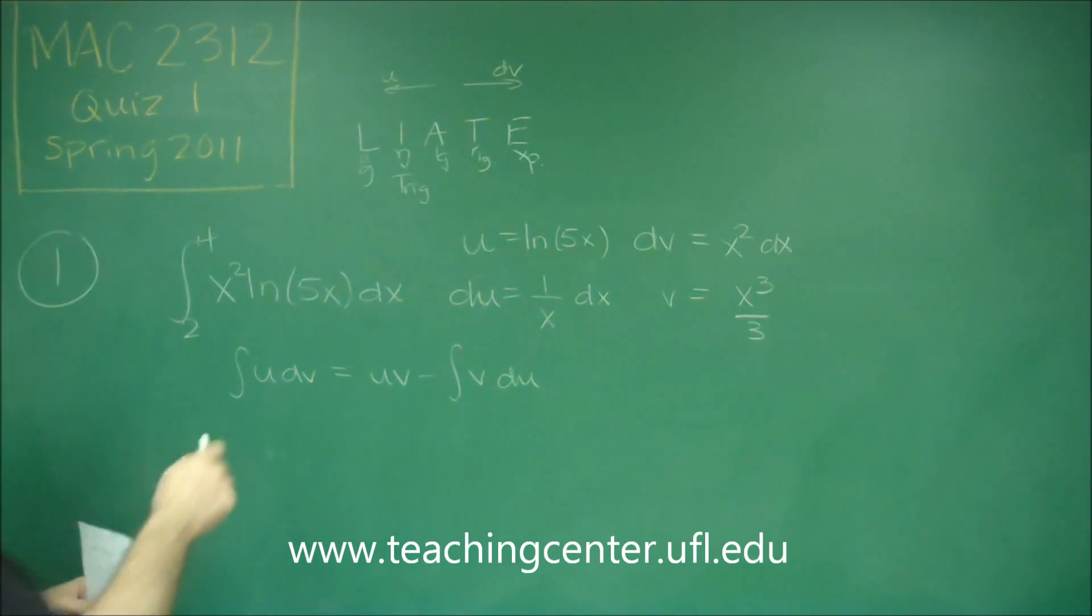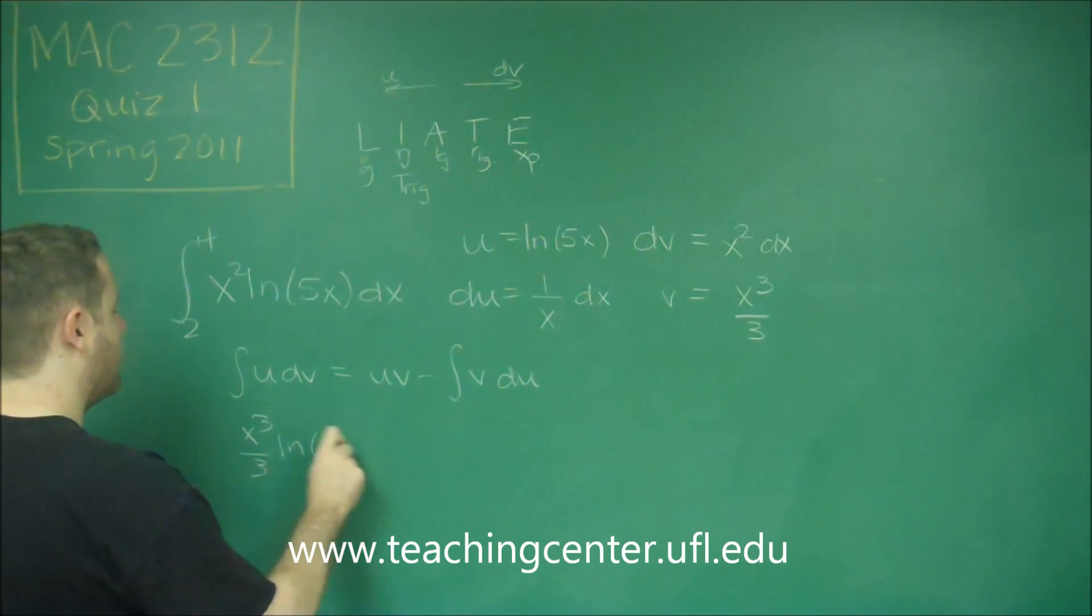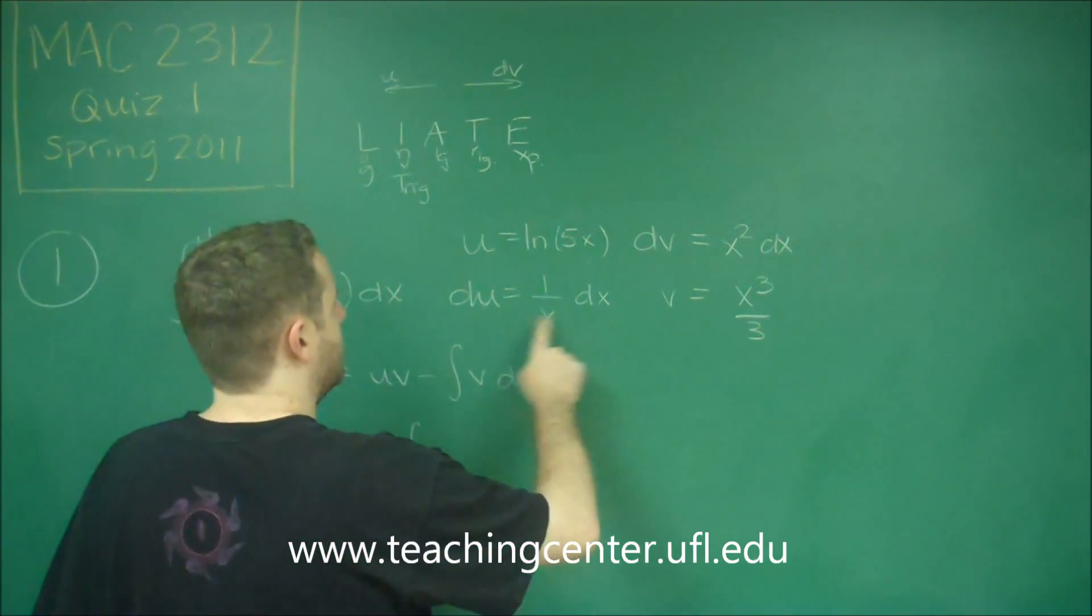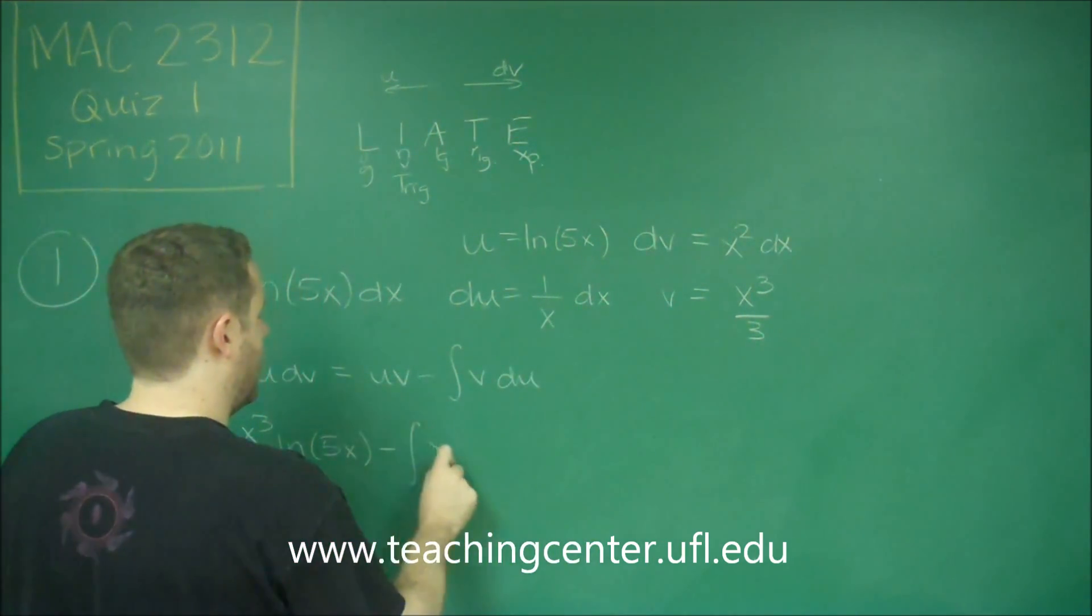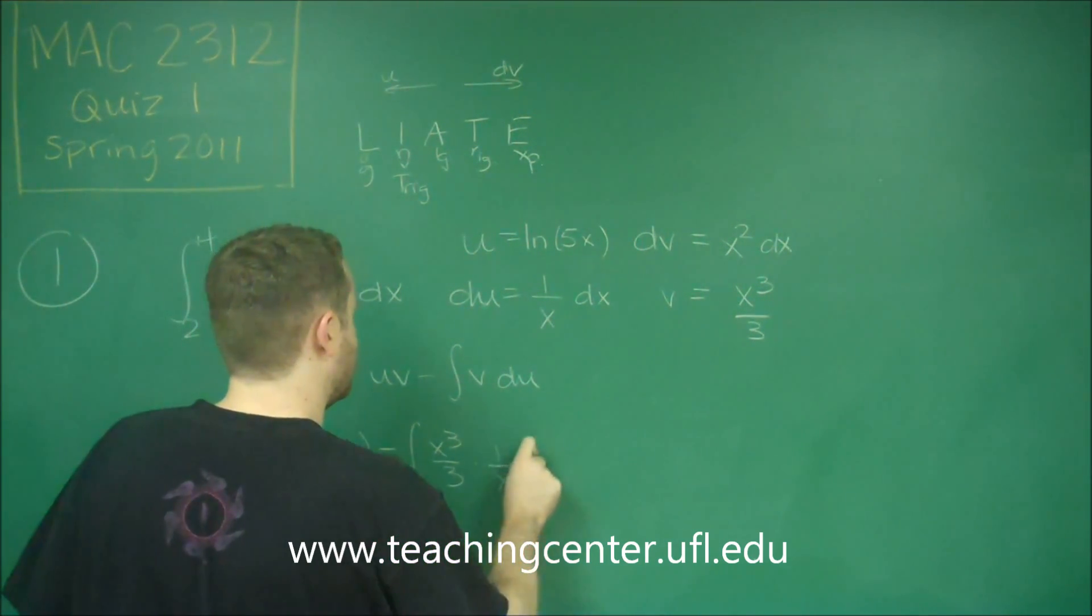So u times v, we get x cubed over 3 times ln of 5x minus the integral of v du. v times du is going to be x cubed over 3 times 1 over x dx.